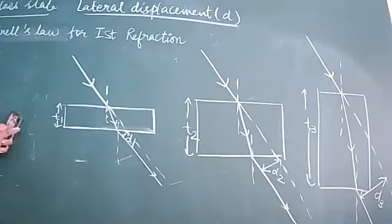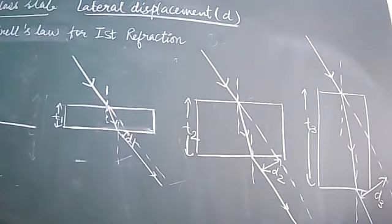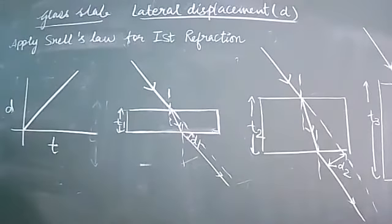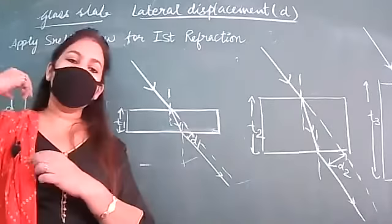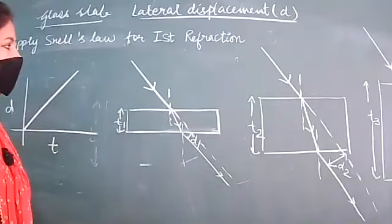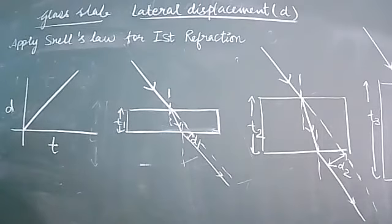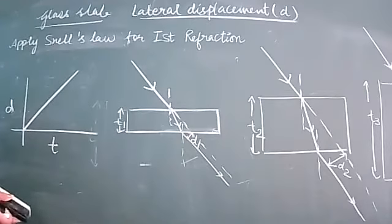You can also plot a graph showing this dependence — thickness of slab on one axis and lateral displacement on the other. They will be directly proportional. So this was the concept of lateral displacement of a glass slab.